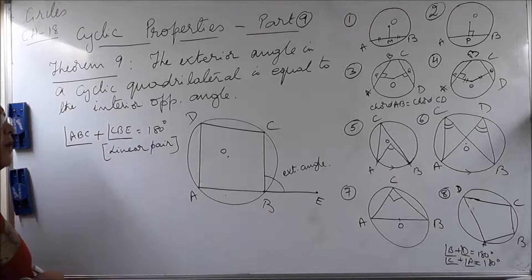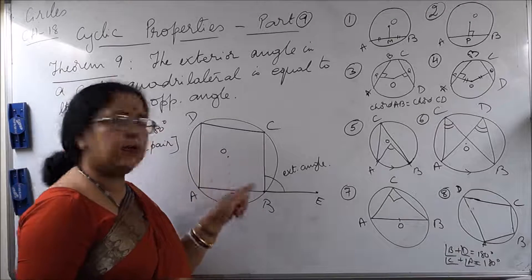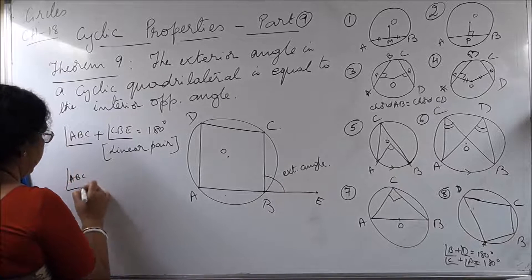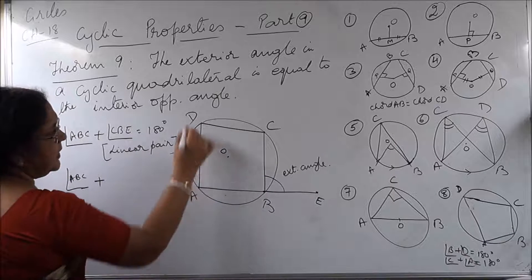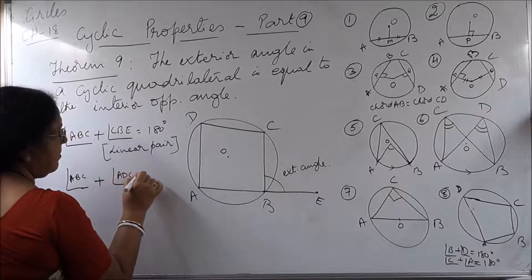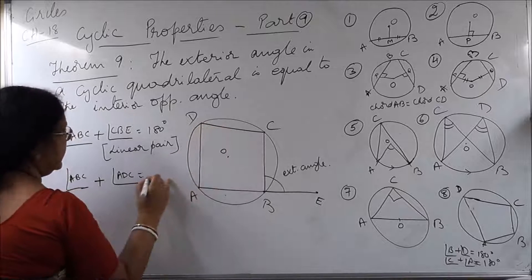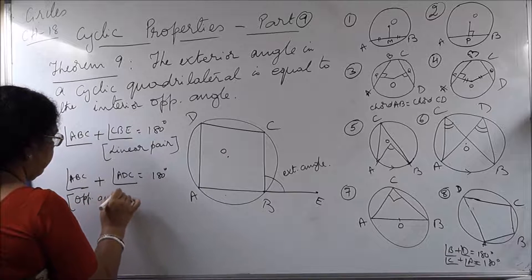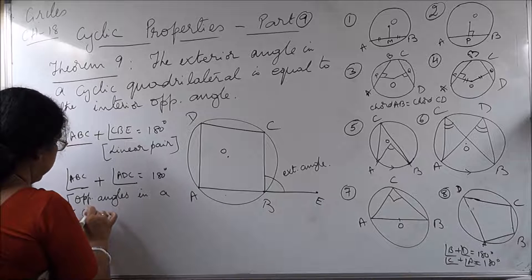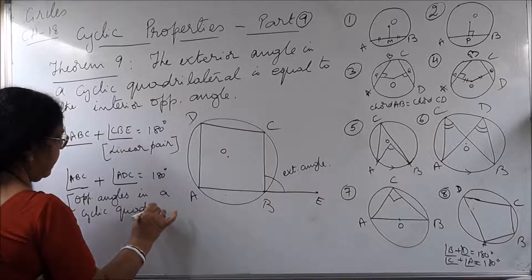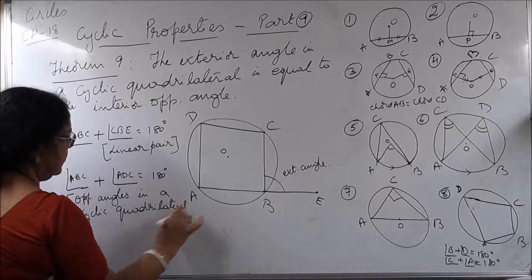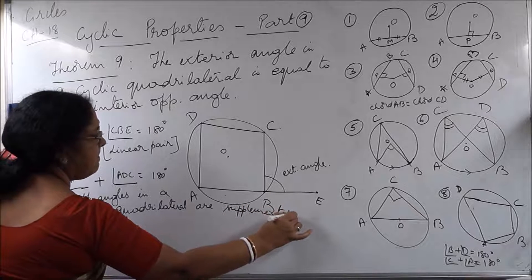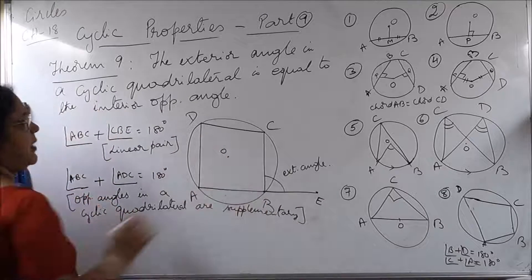Now, in the previous theorem we learned that the opposite angles in a cyclic quadrilateral are supplementary. So according to that theorem, angle ABC plus angle ADC also equals 180 degrees, because opposite angles in a cyclic quadrilateral are supplementary. That is the theorem we have learned. According to that theorem, the sum of these two angles is 180.